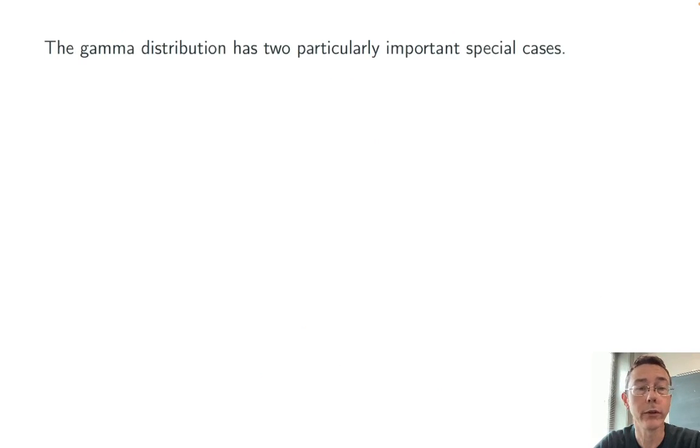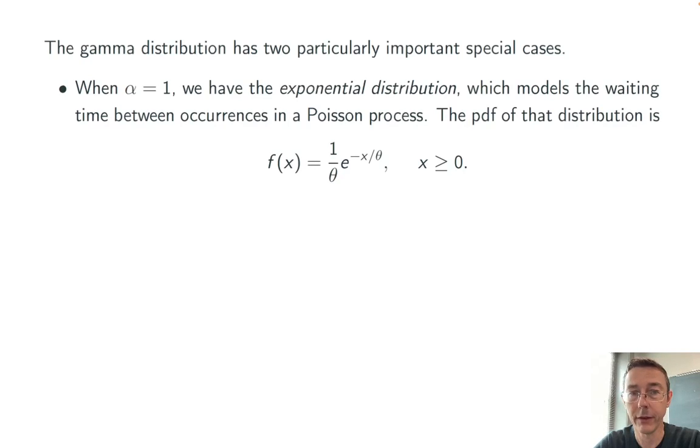There are two particularly important special cases to the gamma function. First of all, if alpha equals 1, so we're just waiting for one occurrence, we have the exponential distribution, which specifically models the waiting time between occurrences in a Poisson process. In other words, the waiting time for a single occurrence. The gamma function's PDF simplifies to 1 over theta, e to the negative x over theta, in this case.